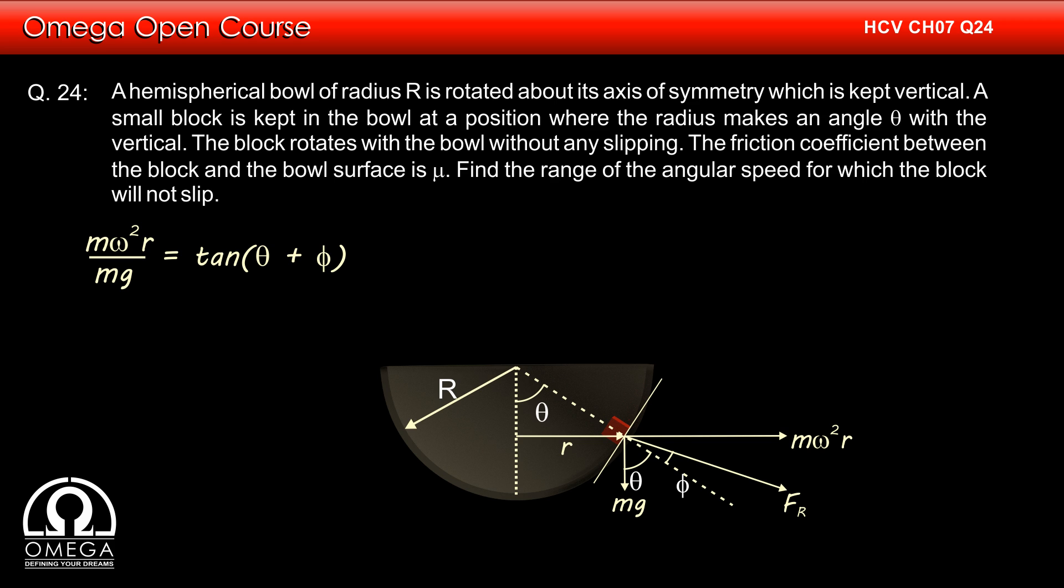In this case, fr makes an angle theta plus phi with the vertical and therefore m omega squared r divided by mg is equal to tan(theta plus phi).